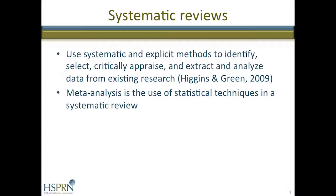Systematic reviews are used to locate, appraise, and evaluate evidence. They may or may not include what's called a meta-analysis. A meta-analysis is used to combine the statistical results of studies to come up with an overall conclusion, and it doesn't always make sense to do one.